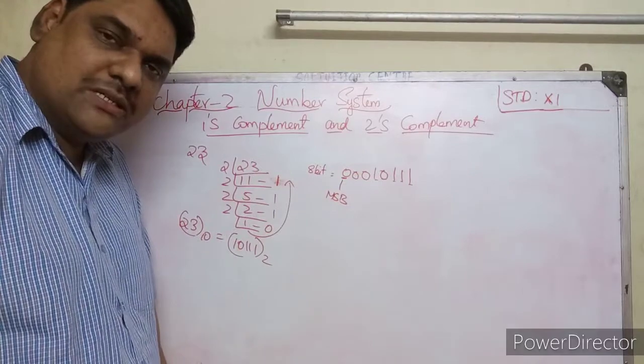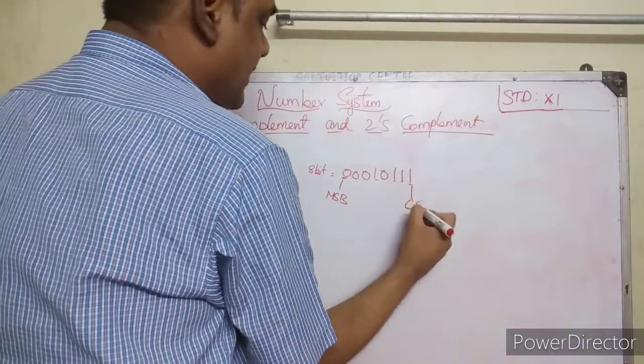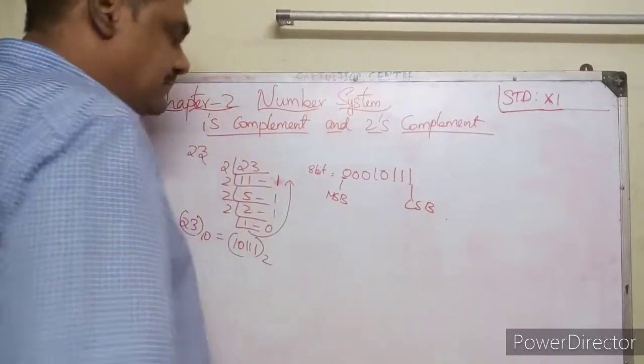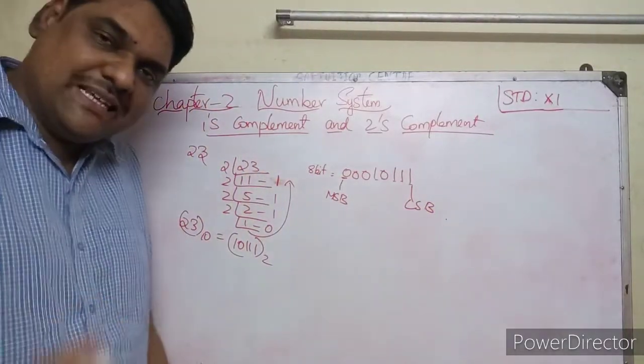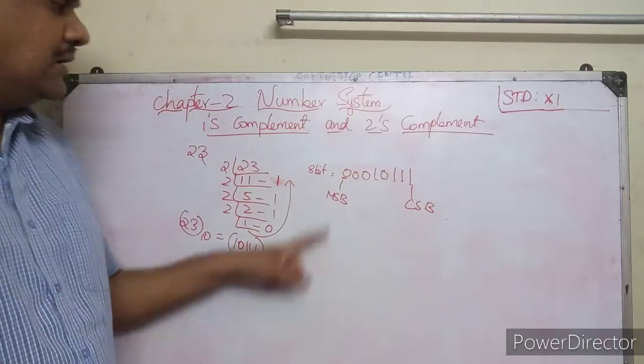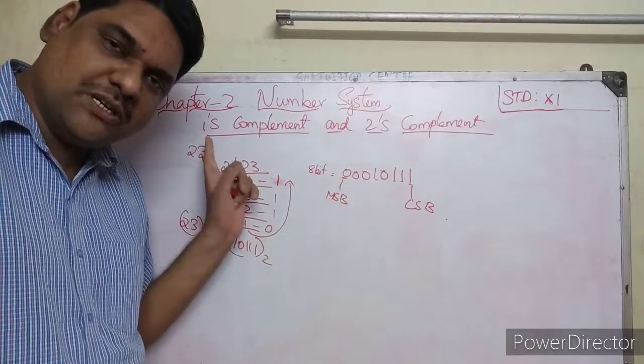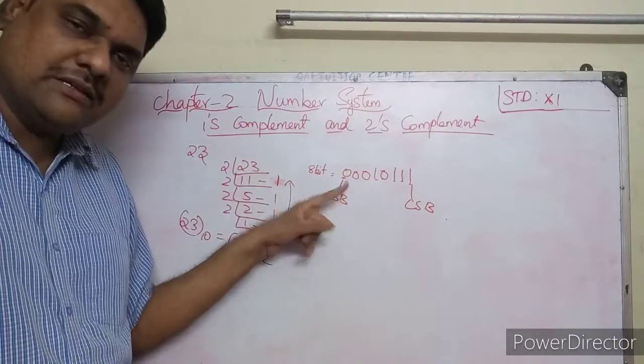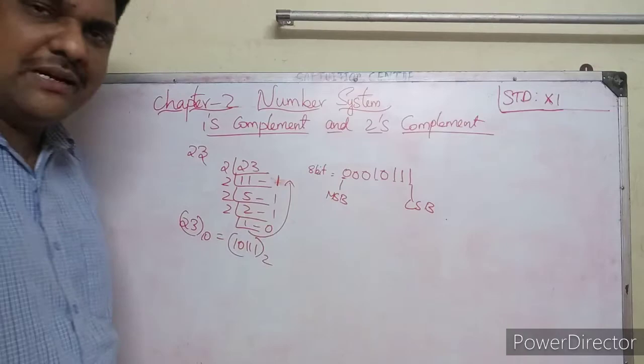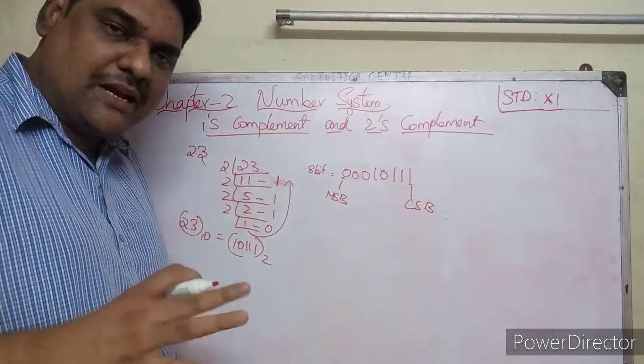This is called MSB - Most Significant Bit - and this is called LSB - Least Significant Bit. If the most significant bit is zero, it's a positive number. If it's one, it's a negative number.